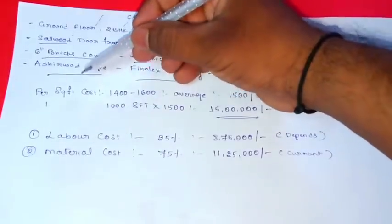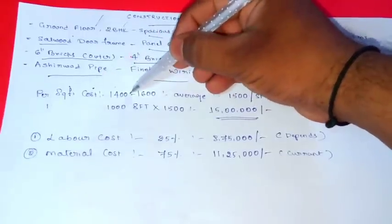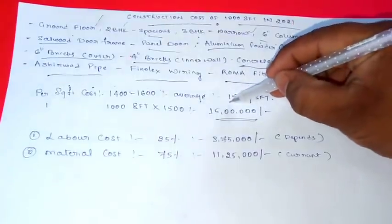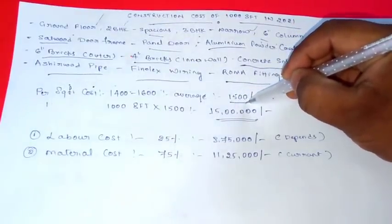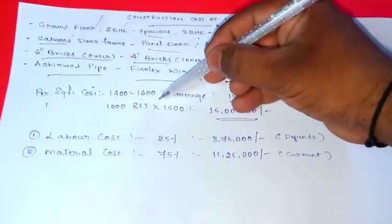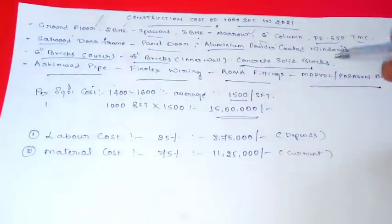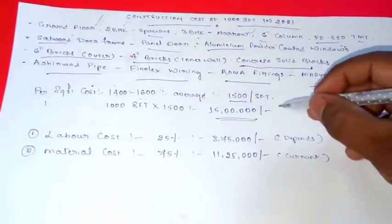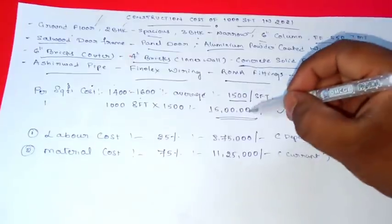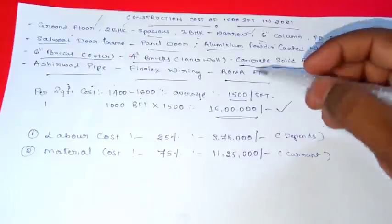This is the latest cost per square feet. The average cost per square feet is 1,500 rupees per square feet. Thousand square feet, thousand five hundred into nine, ten, eight, seven.